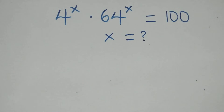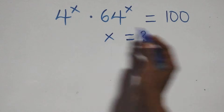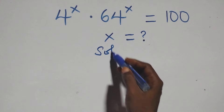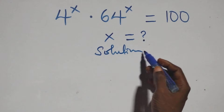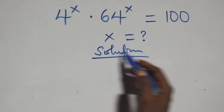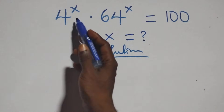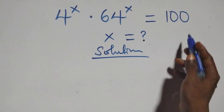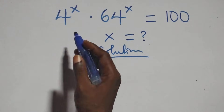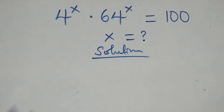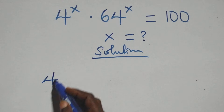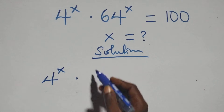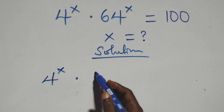Hello, you are welcome. Here we will solve this exponential equation. What we have is 4 raised to the power x times 64 raised to the power x equals to 100. We can rewrite this as 4 raised to the power x times 64 written as...